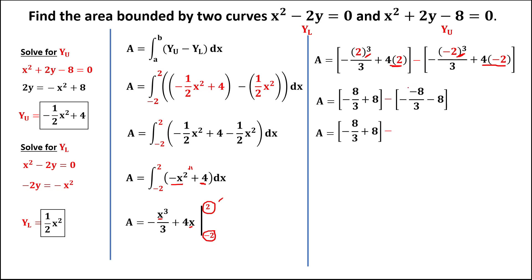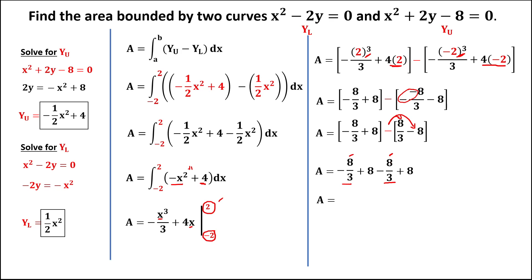Simplifying, the double negative becomes positive. Omitting the brackets: negative 8 over 3 plus 8, then distributing the negative sign gives negative 8 over 3 and positive 8. Combining the x terms: negative 8 over 3 minus 8 over 3 — same denominator, add numerators: negative 8 and negative 8 gives negative 16 over 3. Combining constants: positive 8 plus positive 8 equals positive 16.